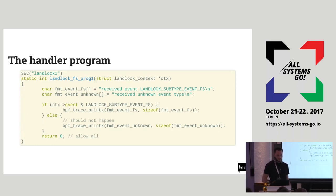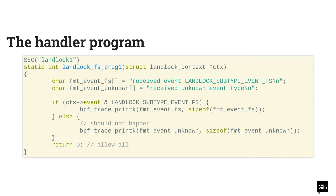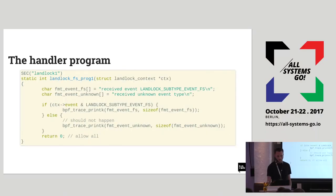Here is how a handler program looks — not the program from the demo, just a short example. You receive a Landlock context with several fields, one of which is the event type, needed to distinguish events. In the end you decide whether to allow or deny. This example would print something to the trace pipe and then allow the operation. There's also an else branch that prints a message, but it can never be reached because there are no other types than subtype event filesystem.